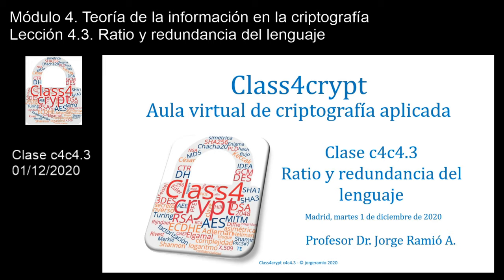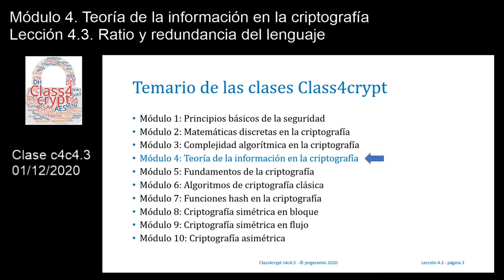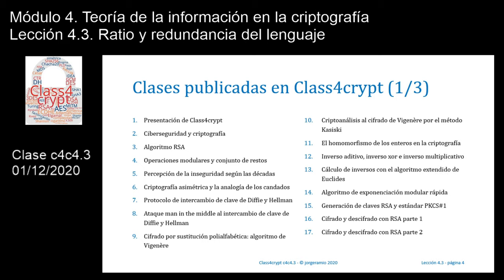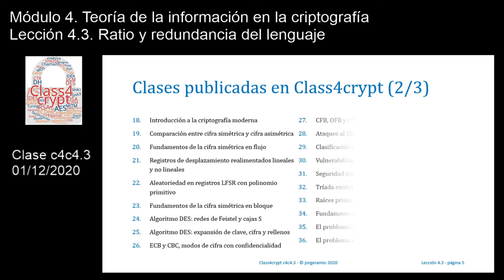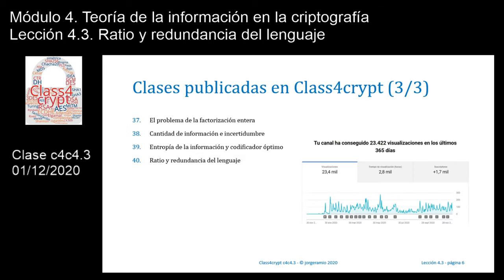Bienvenidos a Class4Crypt, tu aula virtual de criptografía aplicada. Clase número 4.3: ratio y redundancia del lenguaje. Esta clase pertenece al módulo 4 dedicado a la teoría de la información en la criptografía. En las siguientes tres diapositivas se muestran los títulos de las 40 lecciones ya publicadas en este canal, alcanzando 23.422 visualizaciones en los 11 meses de vida del proyecto Class4Crypt.